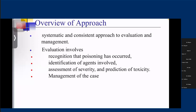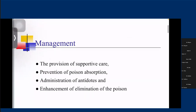After recognition, we have to look for the agents involved, because management depends on what the patient took. We then have to assess for severity and predict toxicity — this is important because some patients need ICU admission while others need only observation and then discharge. The management steps are: provision of supportive care, then prevention of poison absorption, administration of antidote, and enhancement of elimination of the poison.